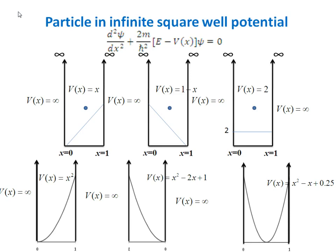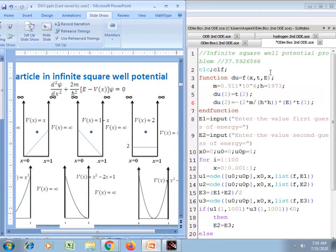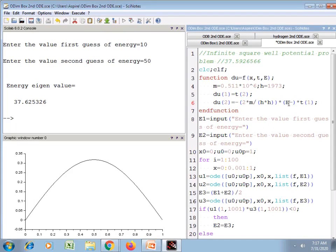Now I will show you how the energy eigenvalues of the particle will be affected by this change. This is the program we wrote yesterday for getting the solution of the Schrödinger equation for the particle in a one-dimensional box or infinite square well. I just need to modify the function written in SciLab according to the potential energy condition and the Schrödinger wave equation — specifically, I just need to subtract the value of potential energy.